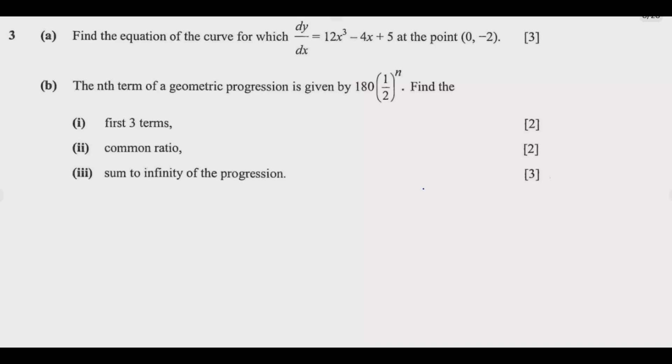The nth term of a geometric progression is given by 180(1/2)^n. Find: (i) first 3 terms, (ii) common ratio, (iii) sum to infinity of the progression.